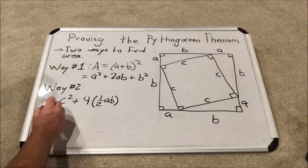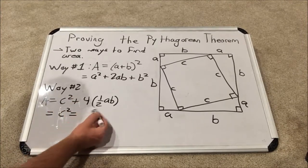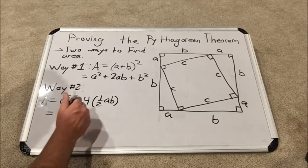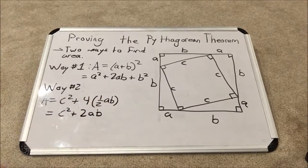Okay, let's simplify this expression. We have C squared equals, what's four times one-half? Two. So we have C squared plus 2AB.